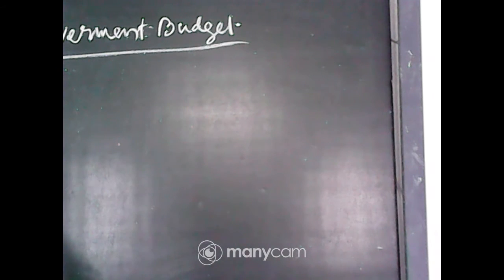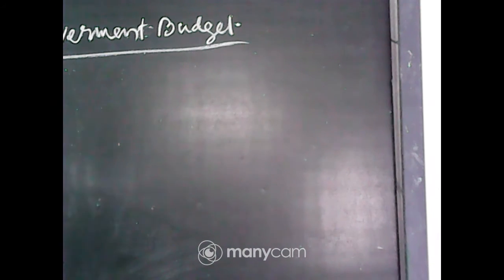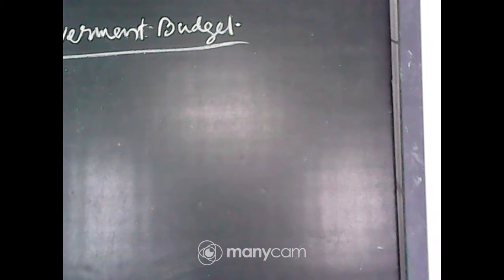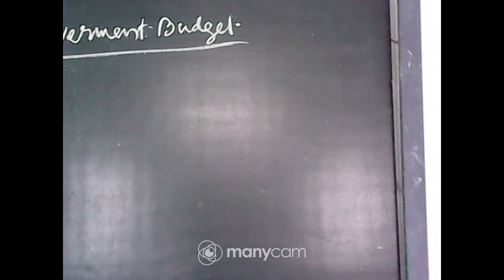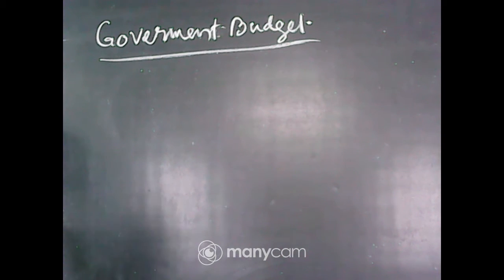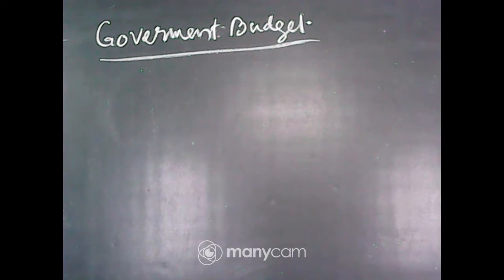What do you mean by budget? Each and every country makes a budget before starting the financial year. Not only the government, but also individuals, clubs, and societies — before the starting of the financial year, they make a budget. Budget means the statement of revenue and expenditure of that particular financial year.